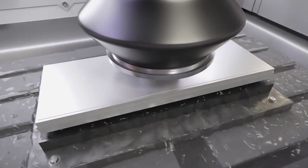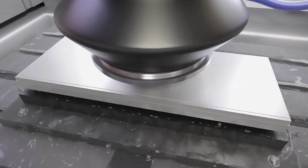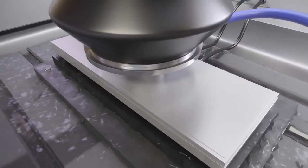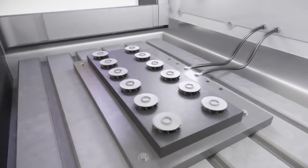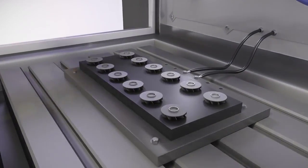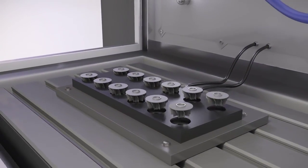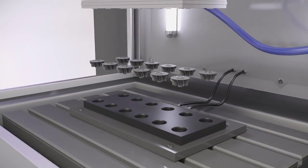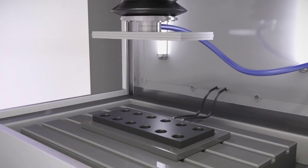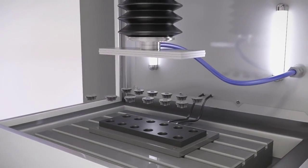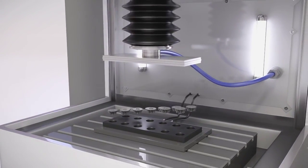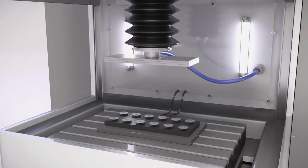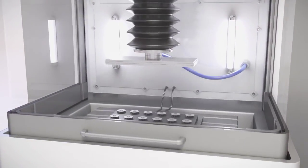This electrode has the inverse form of the desired end product and suffers no principal wear during the process. The material used for the electrode does not have to be harder than the workpiece either because it makes no contact with the workpiece electrically or mechanically. The metal workpiece in its raw form is dissolved via an electrochemical process to achieve the desired end product.